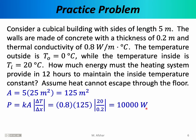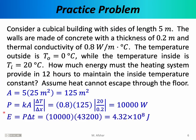This means the building loses 10,000 joules of energy every second to the outside world, and the heating system must replace 10,000 joules every second. To find the total energy lost over 12 hours, we convert 12 hours to 43,200 seconds and multiply by the power. The total energy that the building loses — and that the heating system must provide — is 4.32 times 10 to the 8th joules.